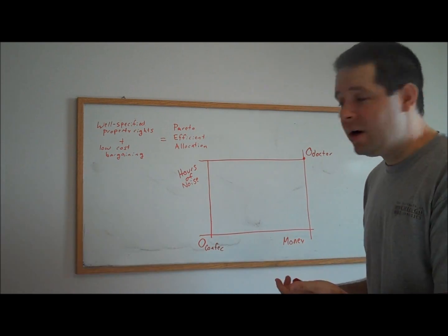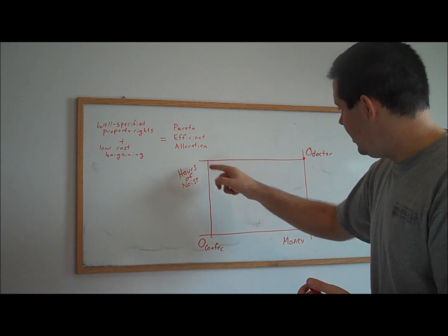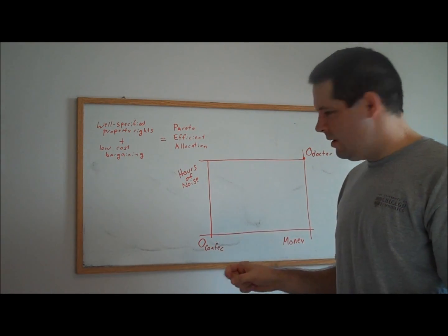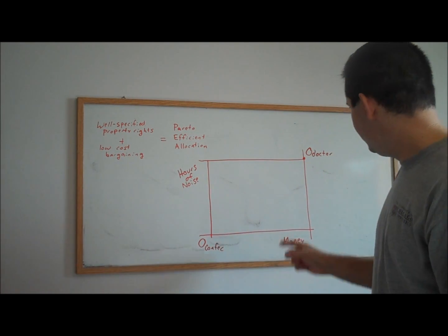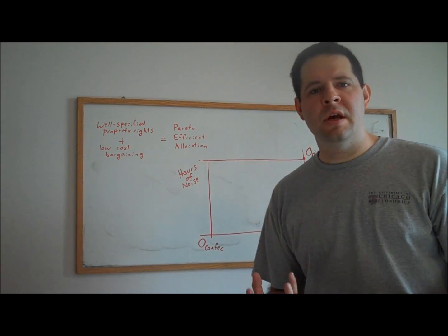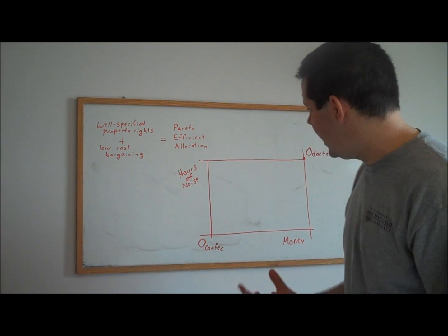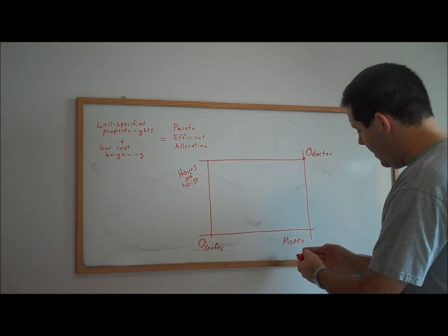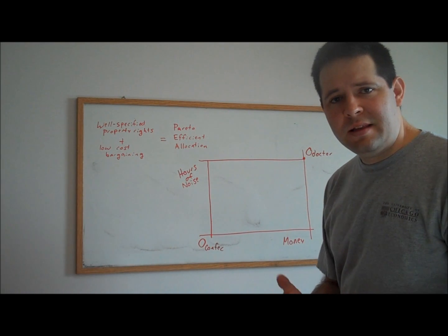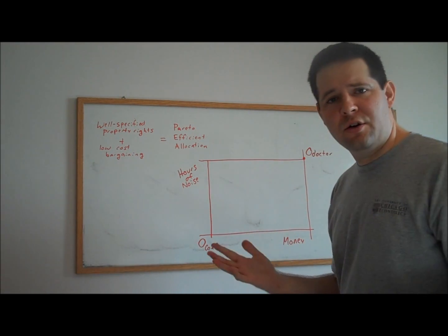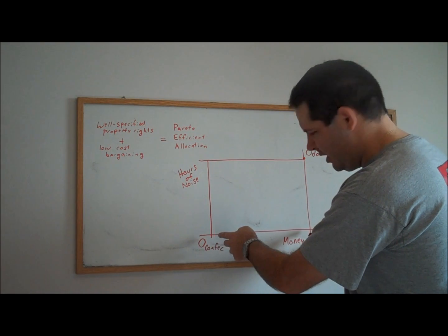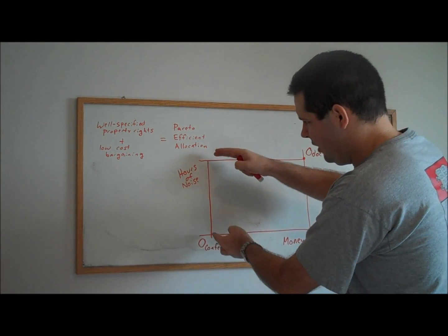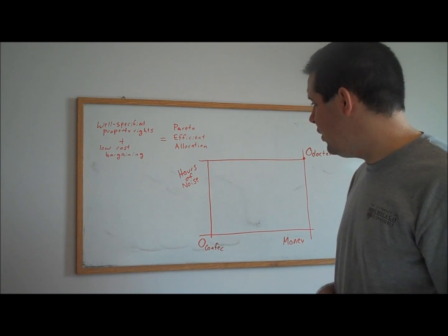Here's an Edgeworth box. All we did really was we took the hours of noise that are possible. We can think about that as a good for the confectioner, and we can think about the doctor, if he owns the hours of noise, they become hours of silence, and so that's a good also for the doctor, but going in this direction. And there's a certain amount of money that the confectioner and the doctor hold, and so we can think about the width of this box as the amount of money the confectioner and the doctor own together, and we can think about the height of this box as the hours of noise.